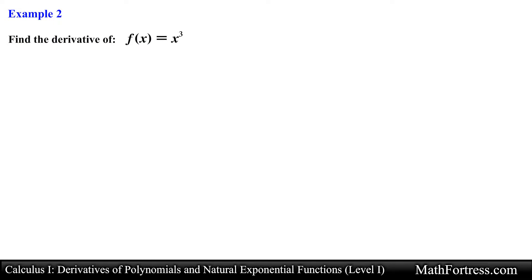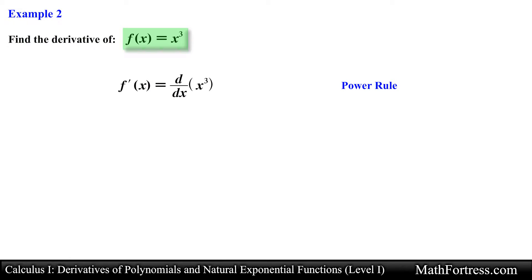Find the derivative of f(x) equals x cubed. We are dealing with a power function of degree 3, so this is a perfect candidate for the power rule. Here n equals 3, so we drop down the 3 and multiply by x raised to the power of 3 minus 1. Simplifying, the derivative is equal to 3x squared.